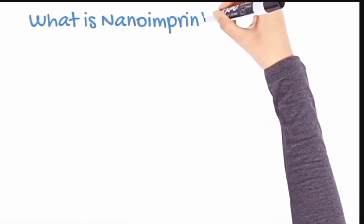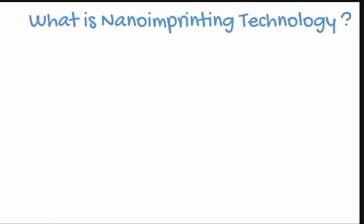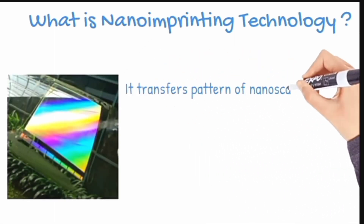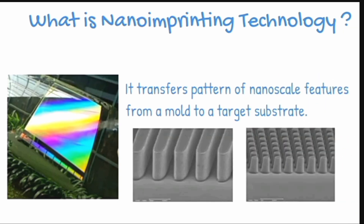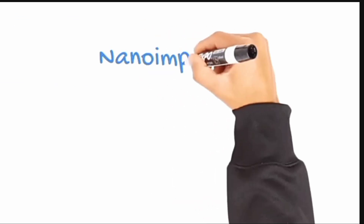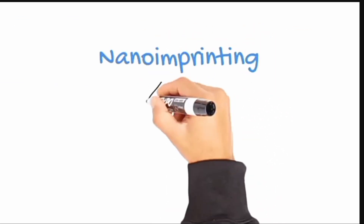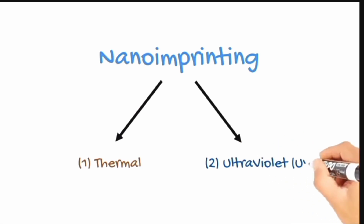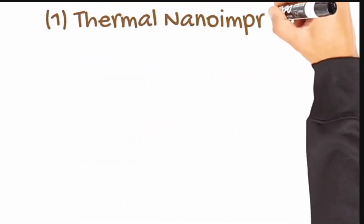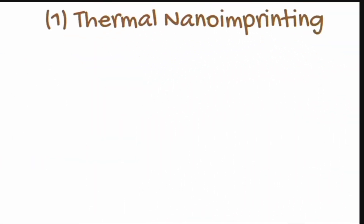What is nano-imprinting technology? It transfers the pattern of nanoscale features from a mold to a target substrate. Nano-imprinting is classified into two types: first, thermal nano-imprinting; and second, ultraviolet nano-imprinting. Here, we are going to see thermal imprinting only.